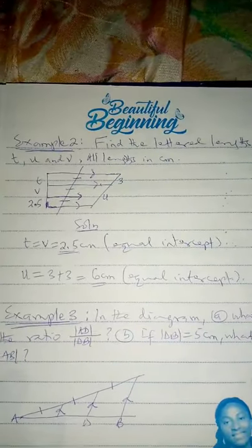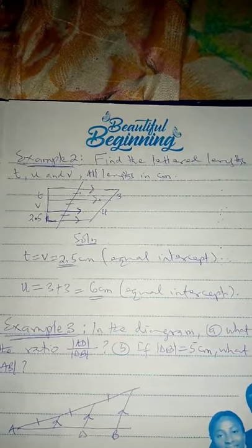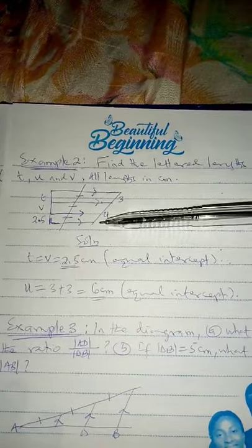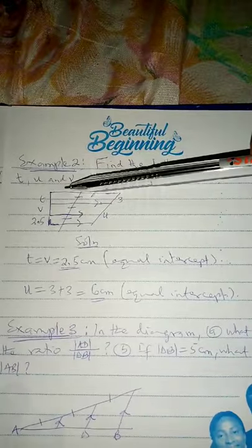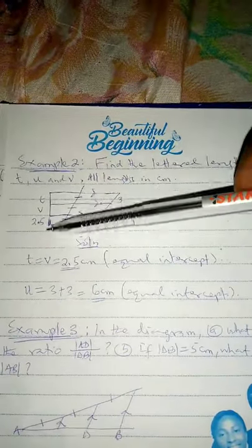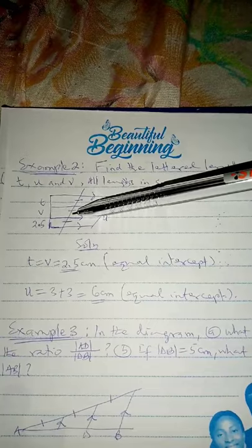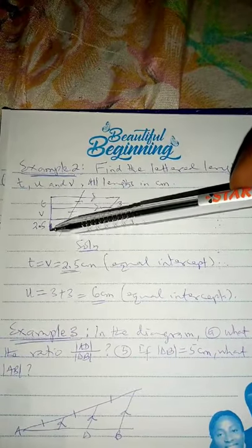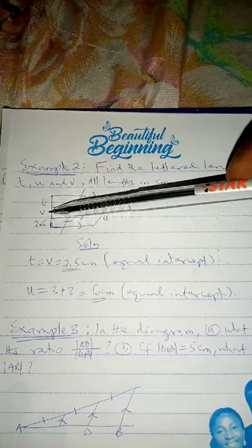Let's consider another example. Example 2: find the unknown lengths T, U, and V. All lengths in cm. See this diagram — here we have four parallel lines, and we have about three transversals. On a particular transversal, we have equal intercepts. And as I told you, when you have something like that, on another transversal we will also generate equal intercepts. So, T is 2.5 cm and V is 2.5 cm.